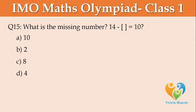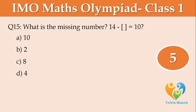What is the missing number? 14 less ___ is equal to 10. Option A: 10, Option B: 2, Option C: 8, Option D: 4.